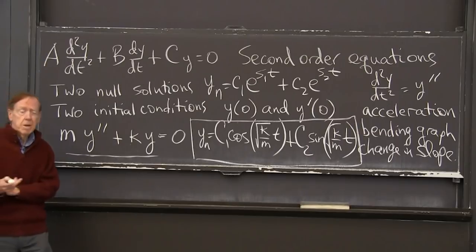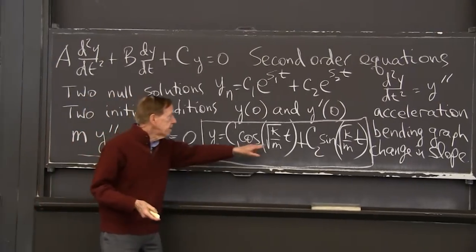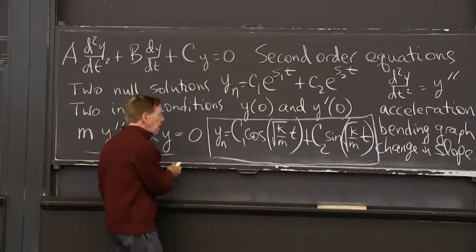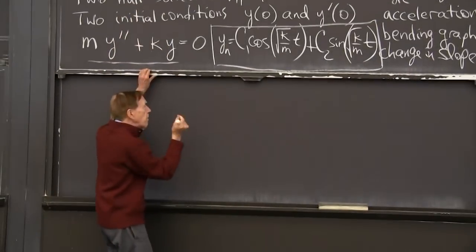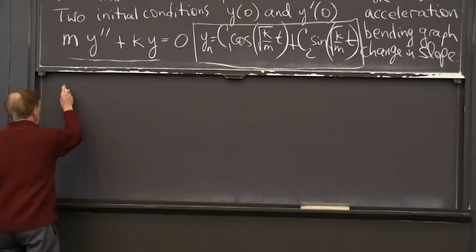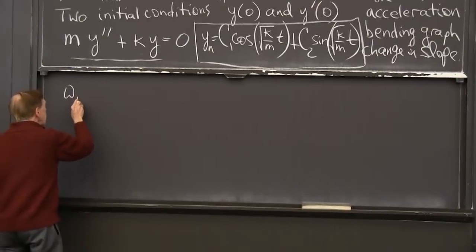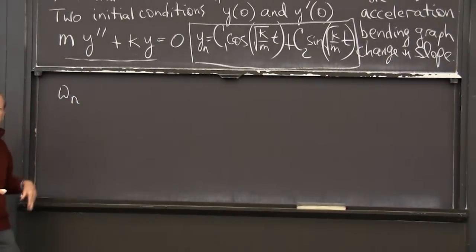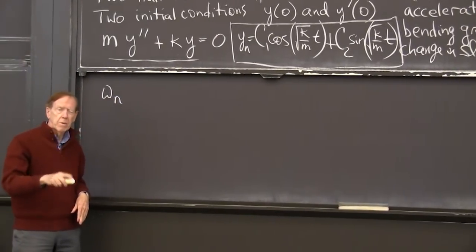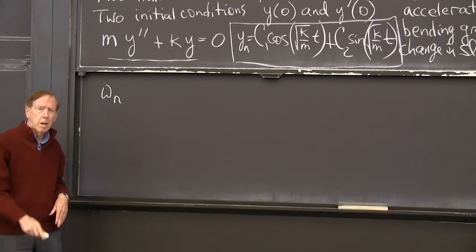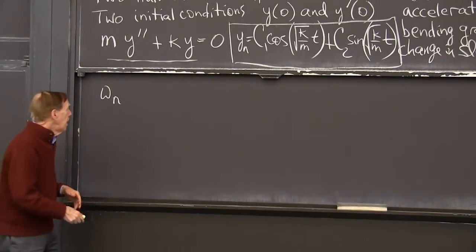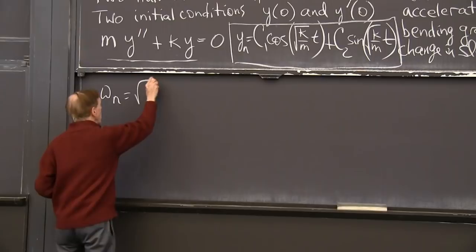Of course, we can't write this square root of k over m forever. Let me do what everybody does, introduce omega. It's omega natural. The n here stands for the natural frequency, the frequency that that clock is going at. And that is the square root of k over m.